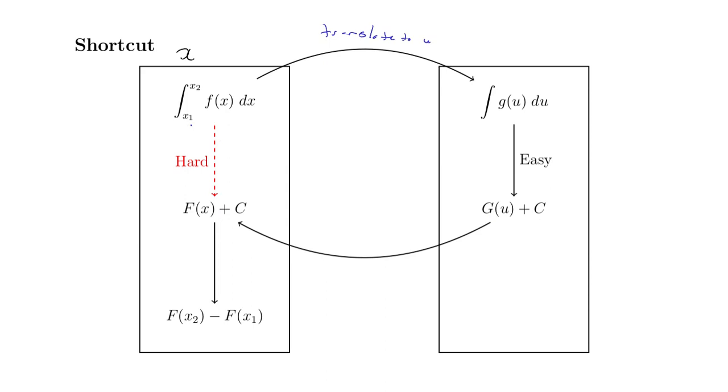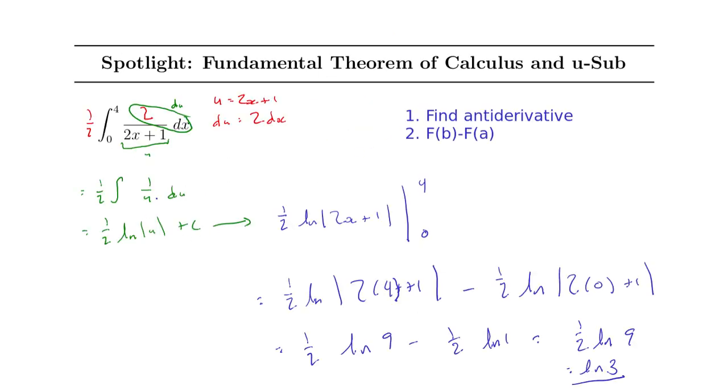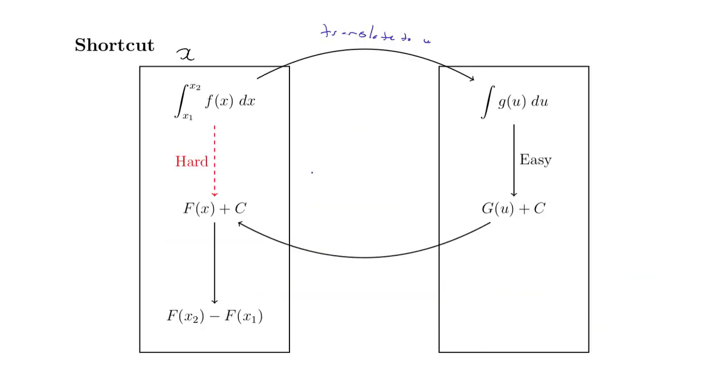And then, what we did in our example before is because since we had these limits of integration on here, we went ahead and just did our fundamental theorem of calculus. So this is what we did. We skipped this hard antiderivative by doing u-substitution. And if you remember, it ended up being a pretty easy antiderivative. The antiderivative of 1 over u is the natural log. So everything worked out nice. We came back over to x, and then went from there.